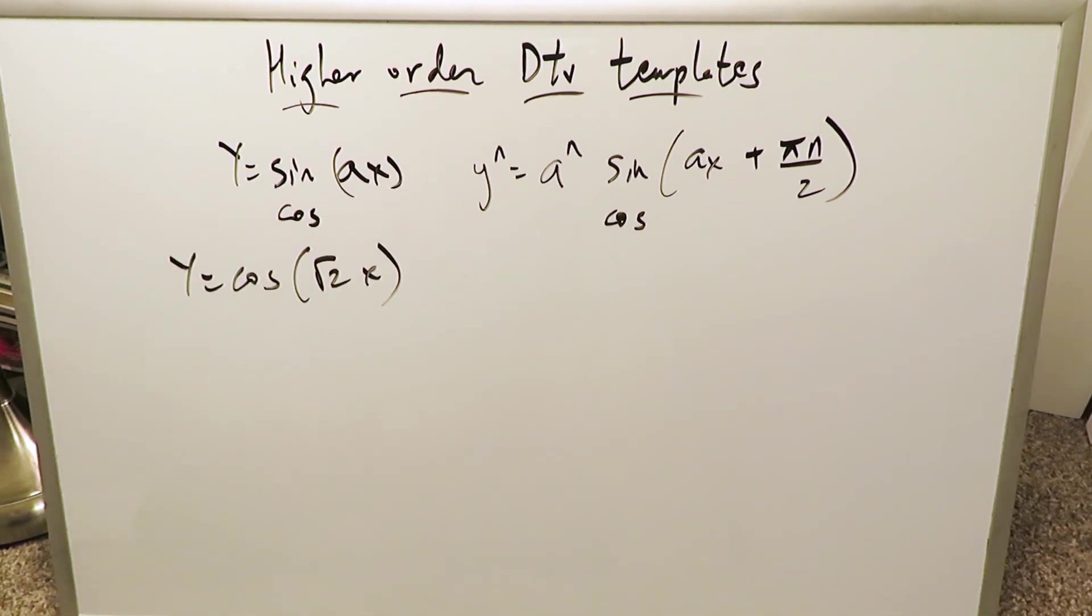Now look at this example: y equals cosine √2x. I want to determine the 10th order derivative but I can use the same template because sine and cosine work very well here. The 10th order derivative here is going to be what?